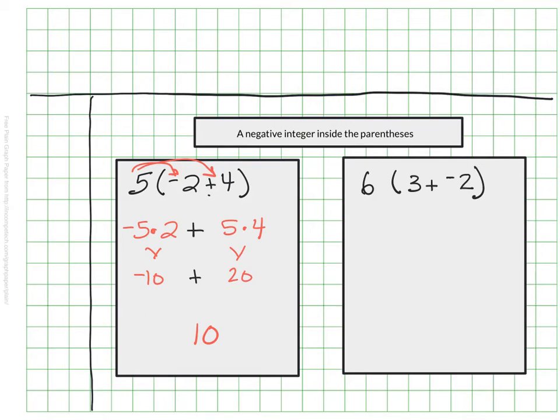How about 6 times the quantity of 3 plus negative 2? So we need to multiply our 6 times our 3 and our 6 times our negative 2. And once again, these are being added together once we're done, so we would know that we have 18 plus a negative 12. And knowing our rules of adding integers, we know that that would leave us with a positive 6.